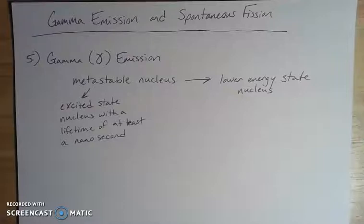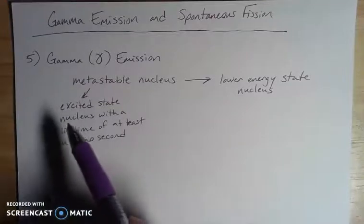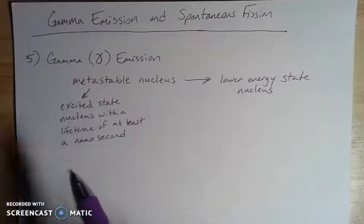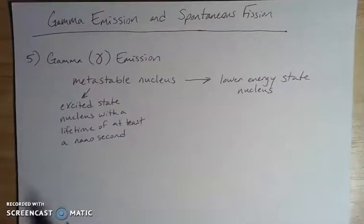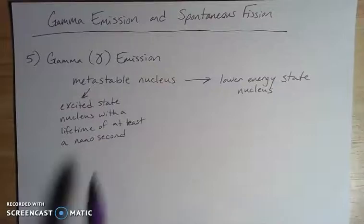Metastable means that it's kind of an excited state nucleus with a lifetime of at least a nanosecond. We've talked about excited state electrons before in the outermost shells. We said at the beginning when we introduced nuclear chemistry that we can think about nuclear particles, these nucleons, in the same way that we do electrons, that they do have kind of hierarchies, that there are energies that are associated with them. If we have an excited state for these particles that lasts at least a billionth of a second, then we have what is called a metastable nucleus.